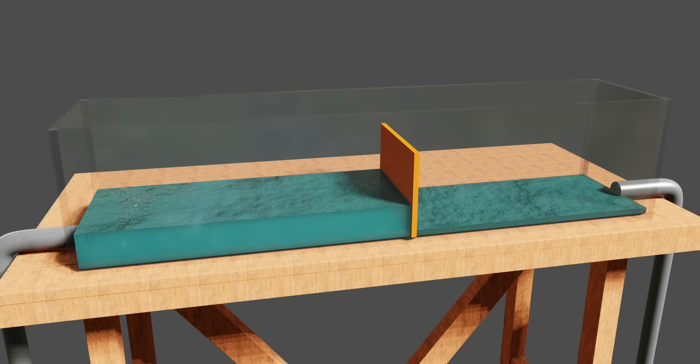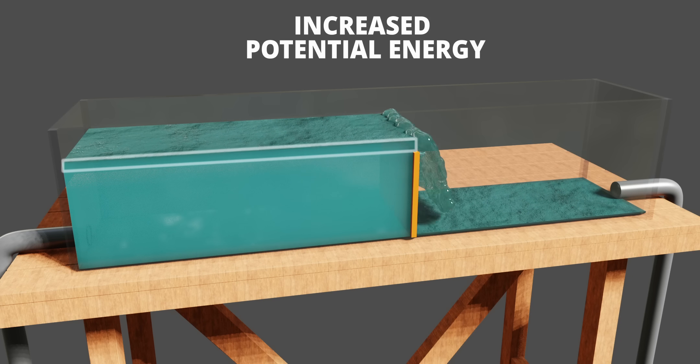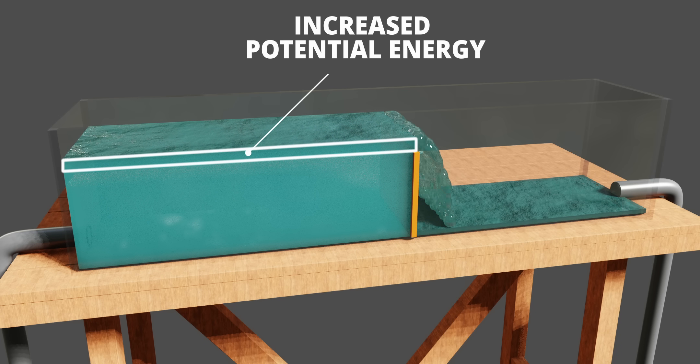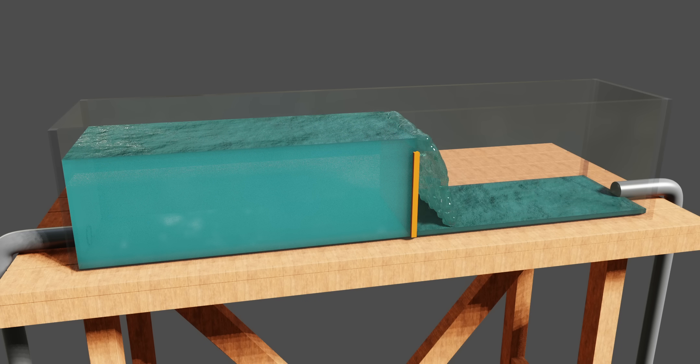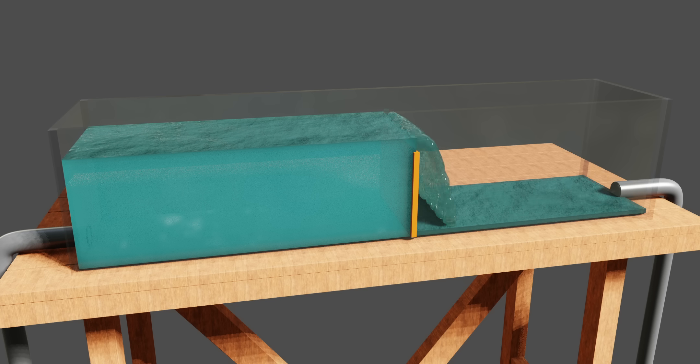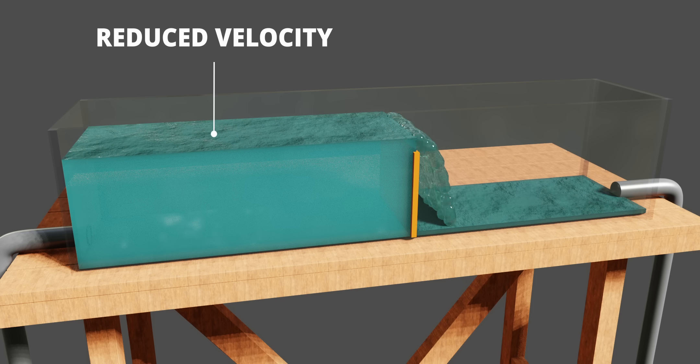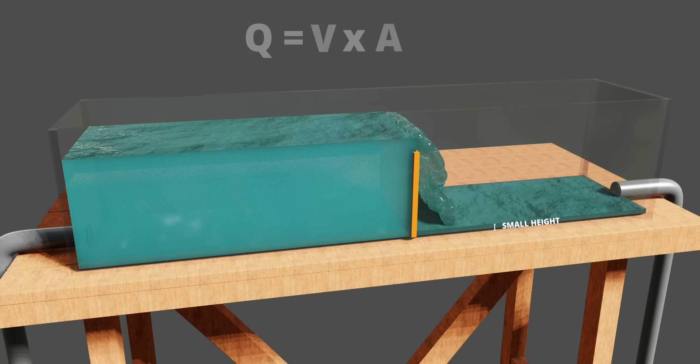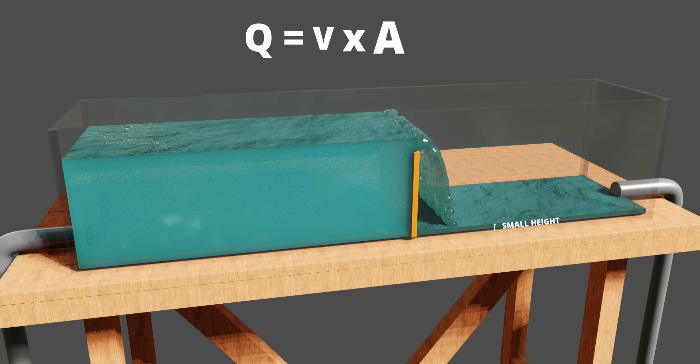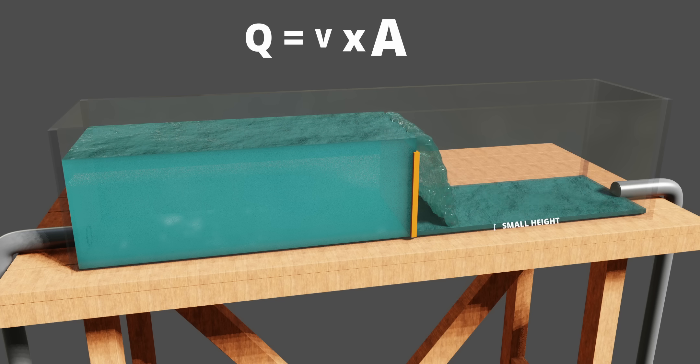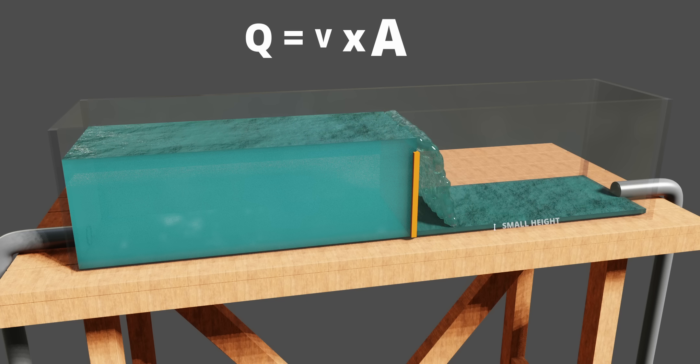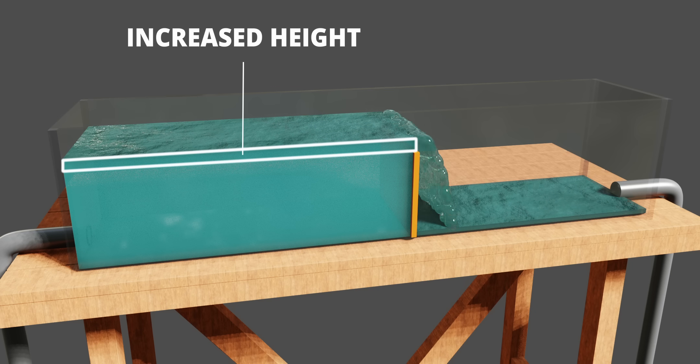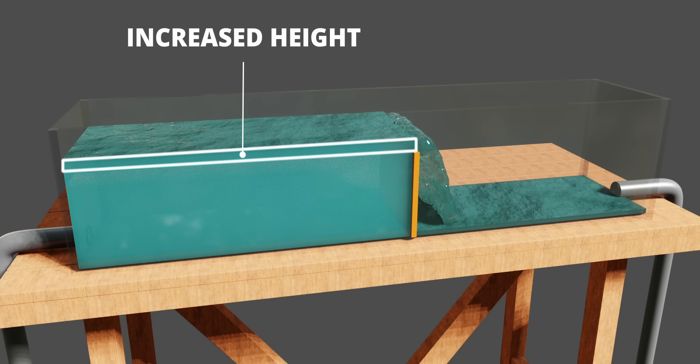When you introduce a weir on the upstream side, the potential energy of the fluid stream increases. This means that to keep the total energy constant on the upstream side, the fluid must reduce its velocity. Since the flow rate is the same, the velocity reduction will result in a higher flow area or higher height of flow. This is why on the upstream side, the height increase is greater than the original water height.